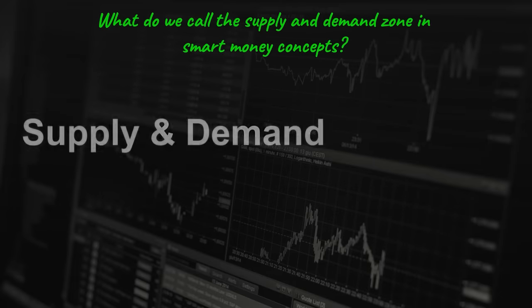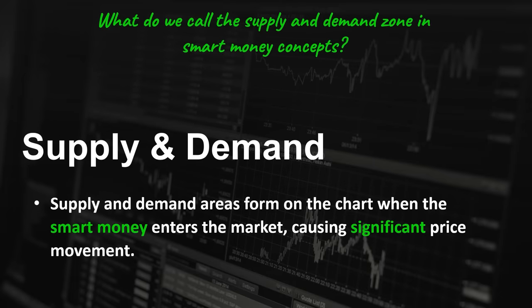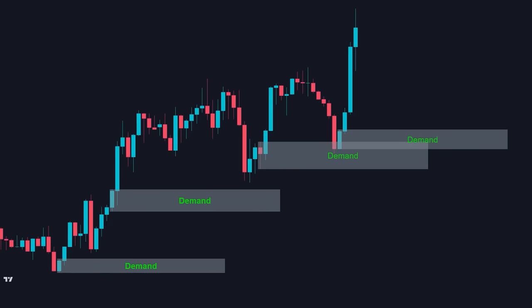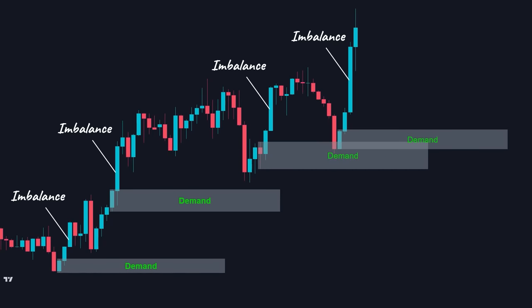What do we call the supply and demand zone in smart money concepts? Supply and demand areas form on the chart when the smart money enters the market, causing significant price movement. It is a zone where the price has rapidly pushed away from, so lots of orders have been placed there.